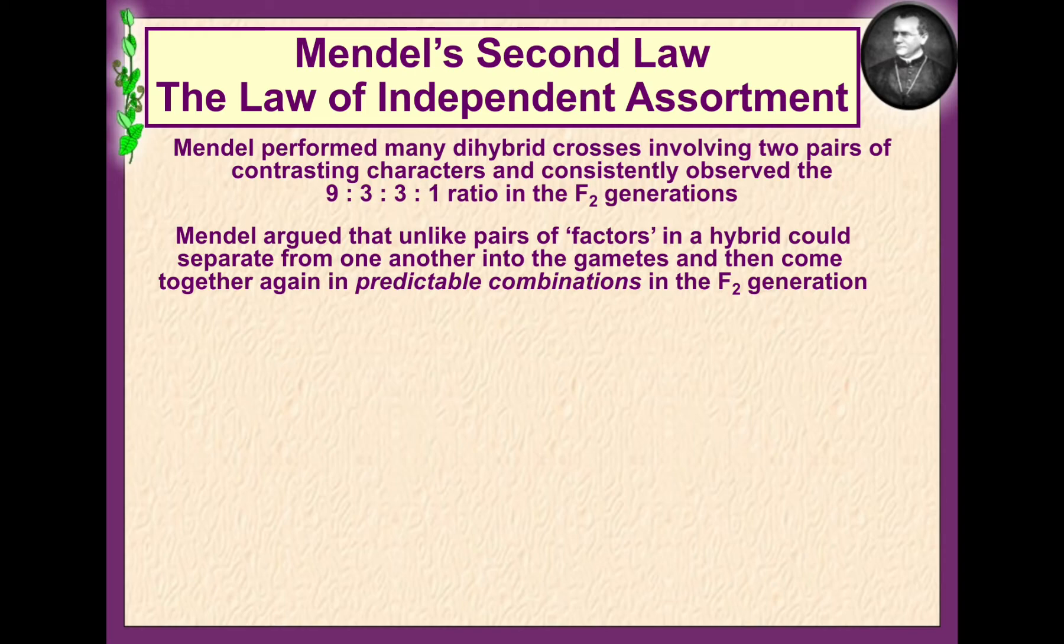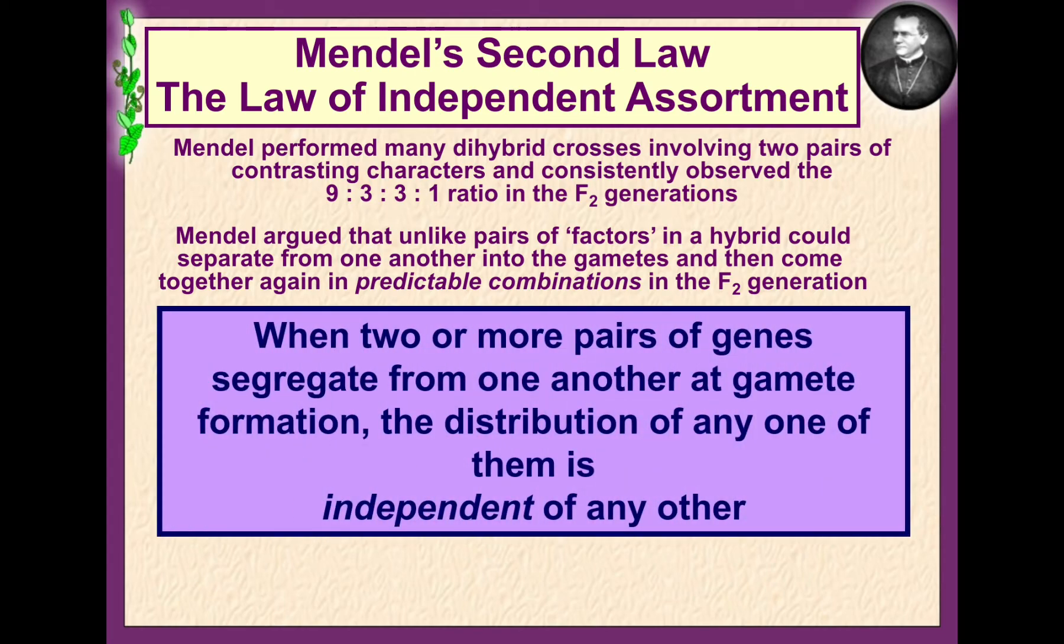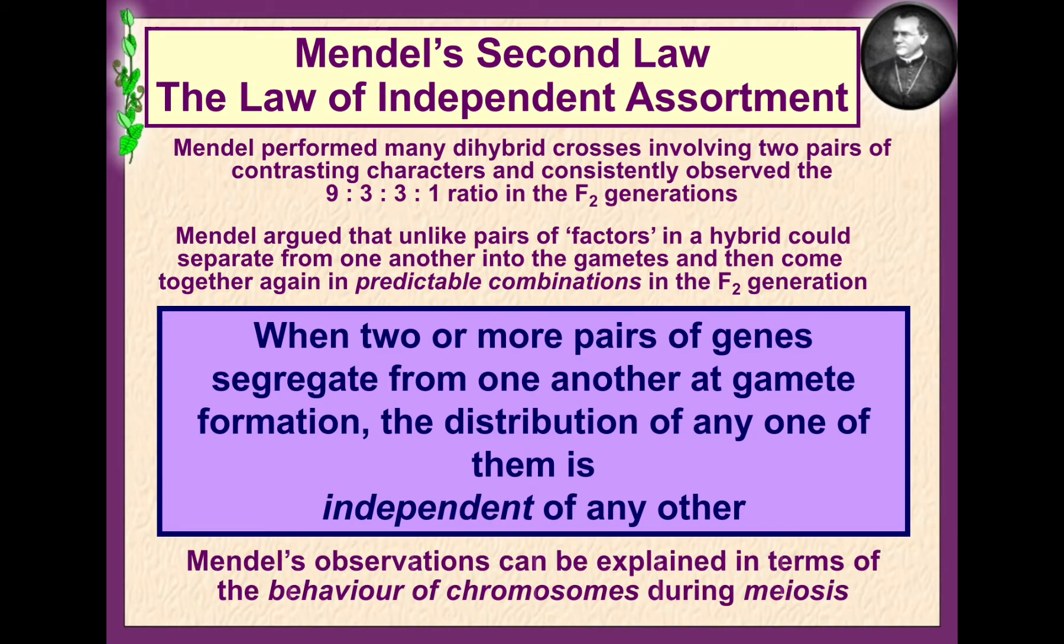In other words, when two or more pairs of genes segregate from one another at gamete formation, their distribution of any one of them is independent of any other. Mendel's observation can be explained by looking at meiosis.